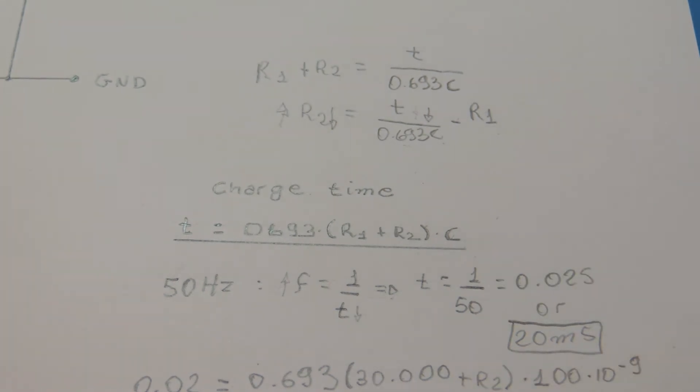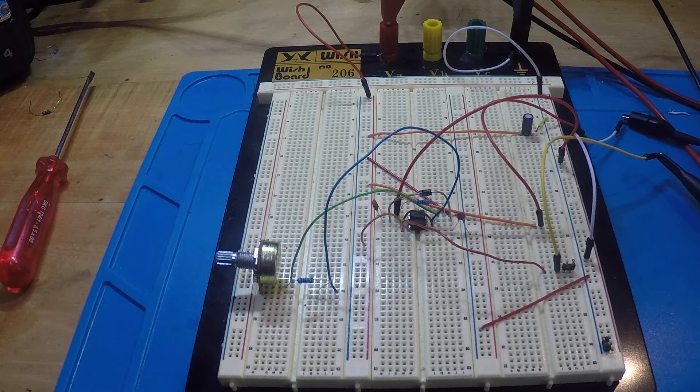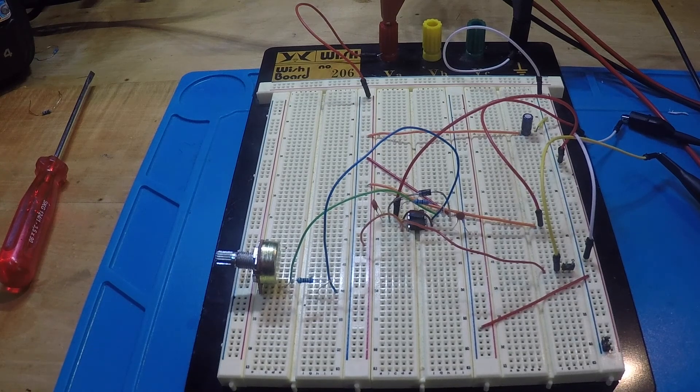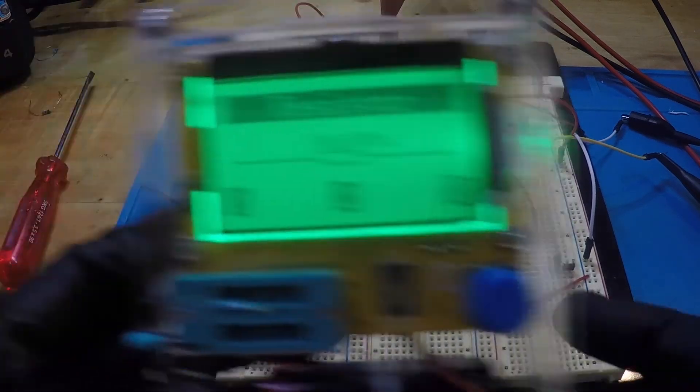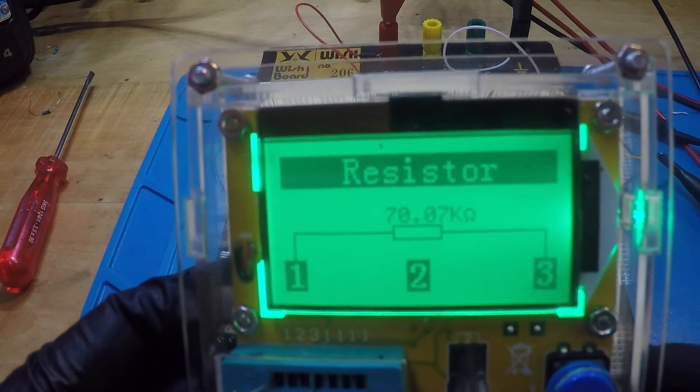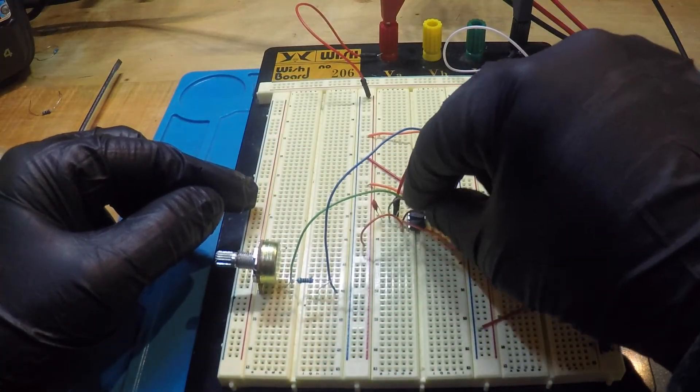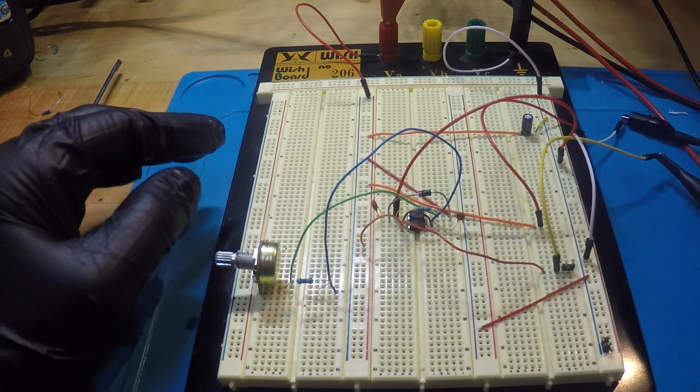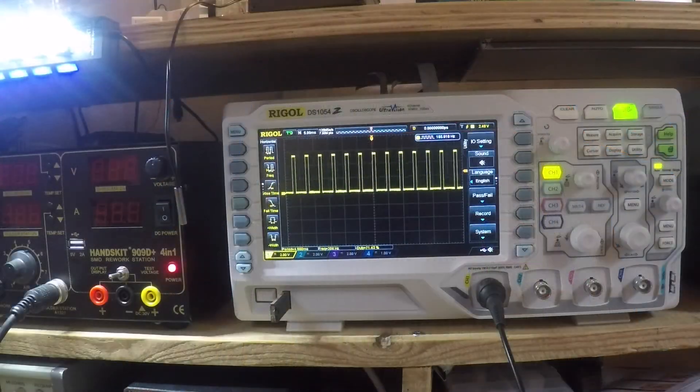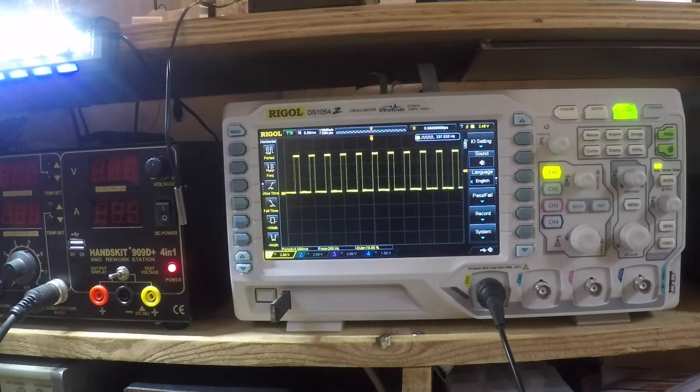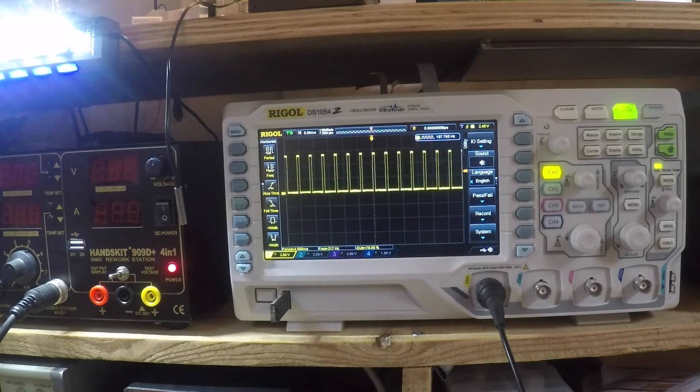Let's see on the scope. Instead of 330k for R2, let's use a 70k resistor and let's see how it affects our signal. As expected, we have a higher frequency, 200 Hz.